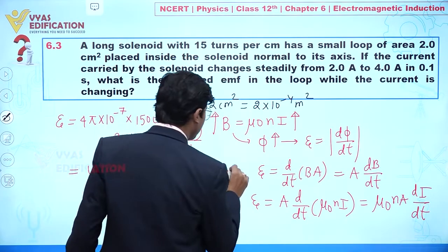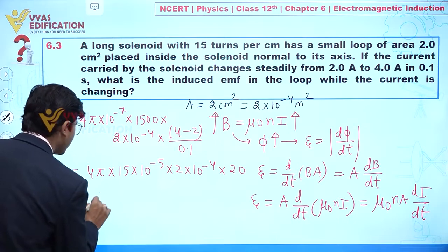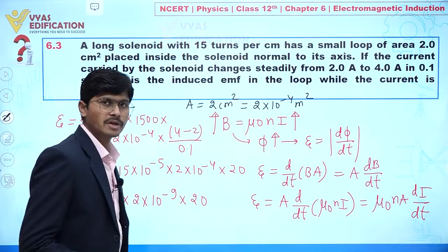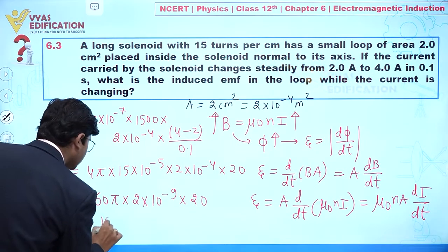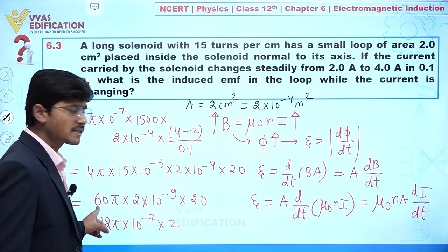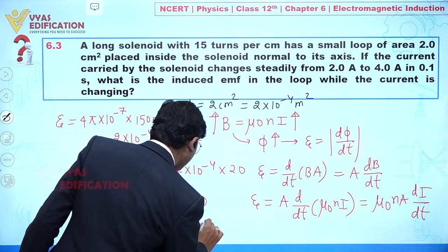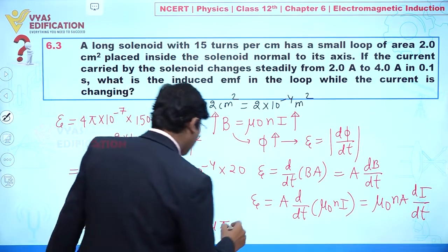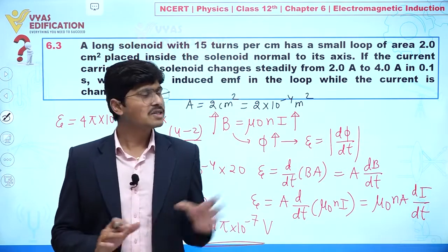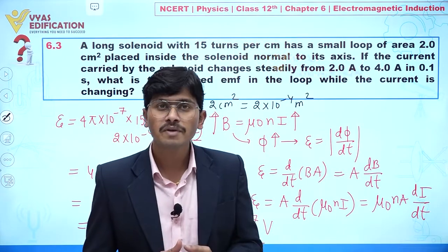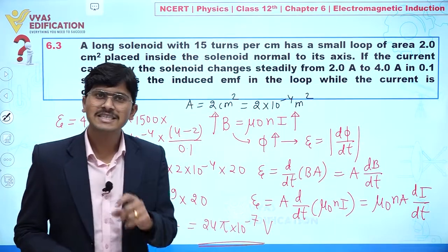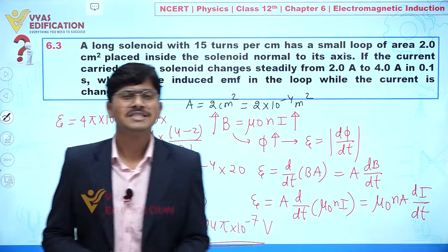Calculating: 4π × 15 × 10⁻⁵ × 2 × 10⁻⁴ × 20 = 60π × 2 × 10⁻⁹ × 20 = 24π × 10⁻⁷ volts. This is the value of the induced EMF. To summarize: current I changes → B changes → flux φ changes → induced EMF is developed. That is the complete solution to this question.